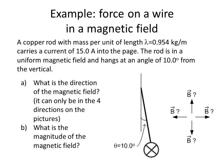Let's do an example involving the force on a current carrying wire in a magnetic field. A copper rod with mass per unit length lambda equals 0.954 kilograms per meter carries a current of 15 amperes into the page. The rod is in a uniform magnetic field and hangs at an angle of 10 degrees from the vertical.